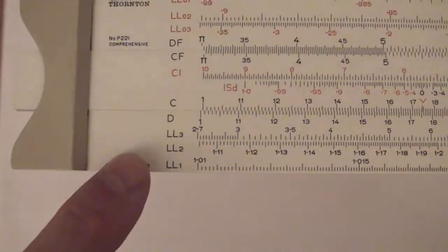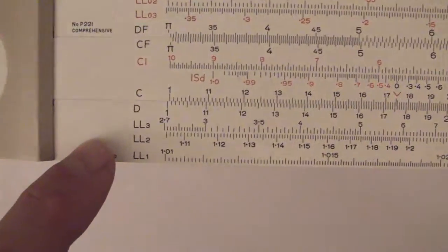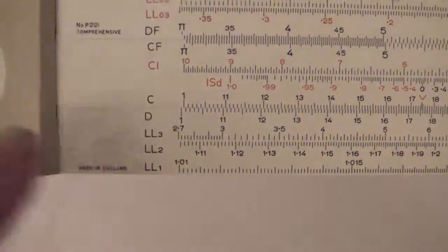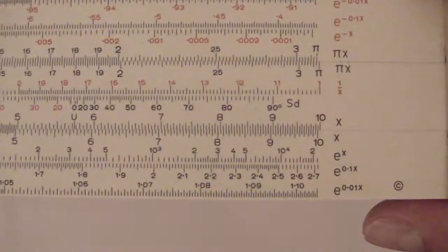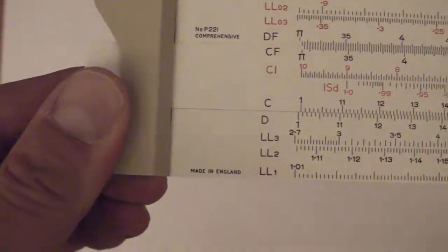The log-log scale down here on the bottom of this Thornton P221. These are incredibly useful for a whole bunch of things, so I thought I'd just talk about what they are and use them to show the difference between the arithmetic mean and the geometric mean.